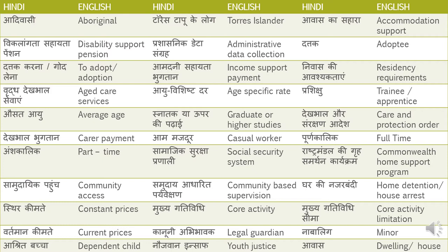Kanuni abhibhavak — Legal Guardian. Guardian is abhibhavak, so kanuni abhibhavak is legal guardian. Nabalik — Minor. Ashrit bacha — Dependent Child. Naujawan insaf — Youth Justice. Naujawan is youth or a young person. Awas — Dwelling or a house.